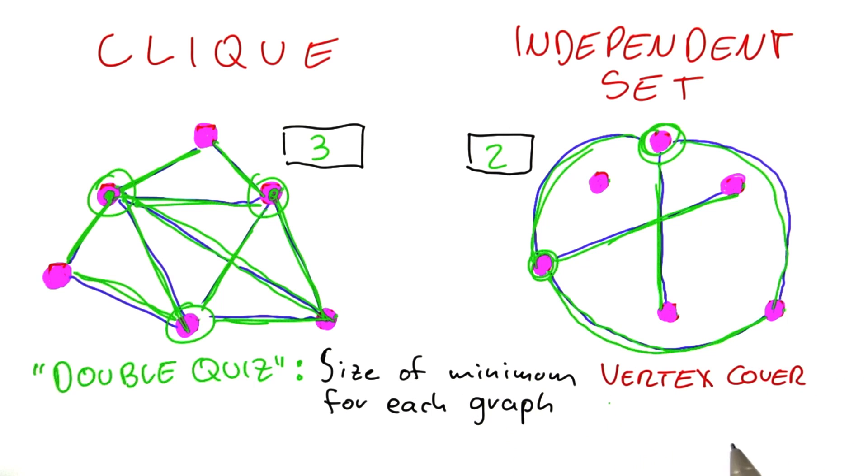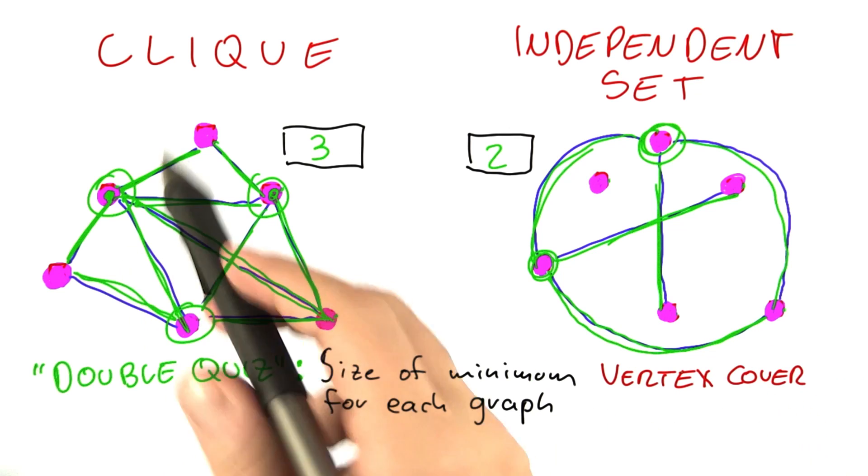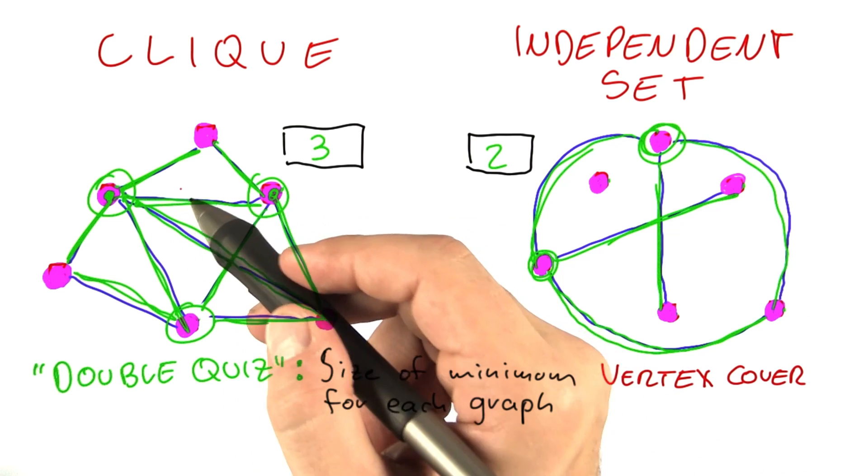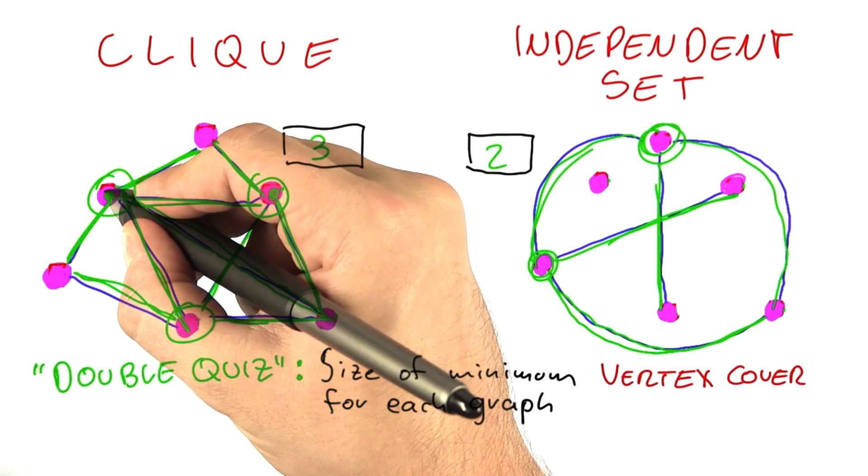So now we did this exercise to see if vertex cover could have any relation to clique or independent set. So let's have a look back at which vertices were contained in the largest possible clique in this network. And those were four vertices.